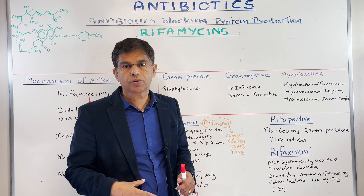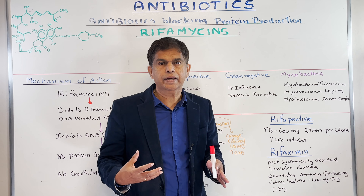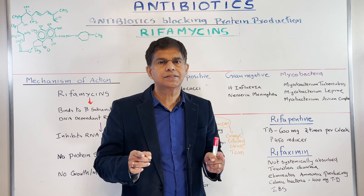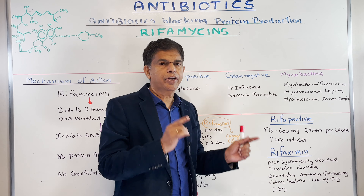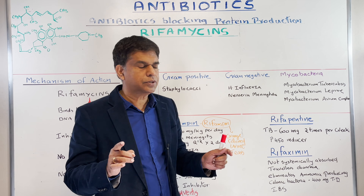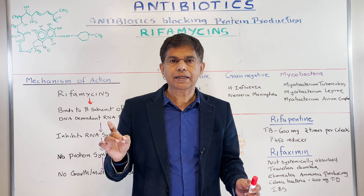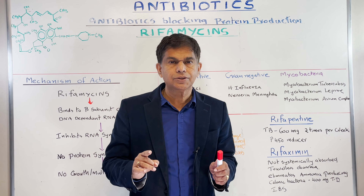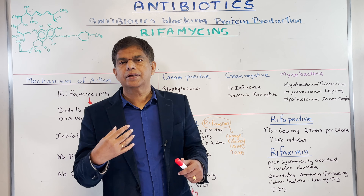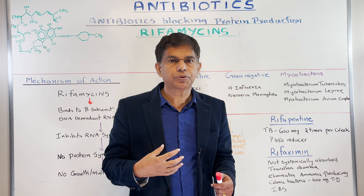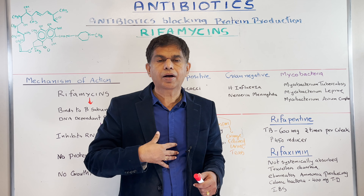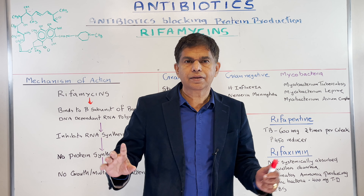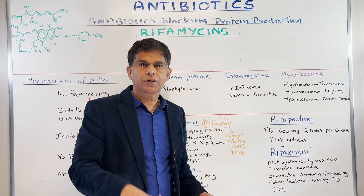An important side effect to remember for rifabutin: it can cause uveitis. Rifapentine can be used in TB at 600 mg two times per week, and it is a P450 inducer. Then we have rifaximin, a very common drug used in hospitals nowadays. The key thing to know: it is not systemically absorbed — if you take it, it works in the gut. It can be used for traveler's diarrhea.